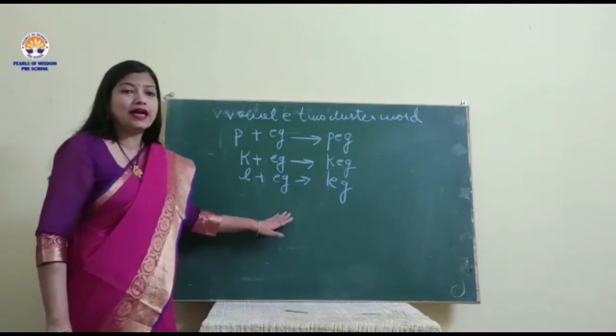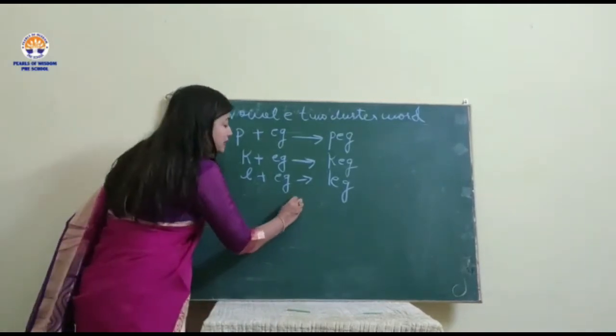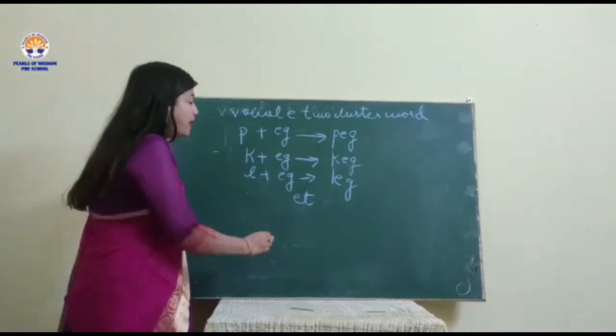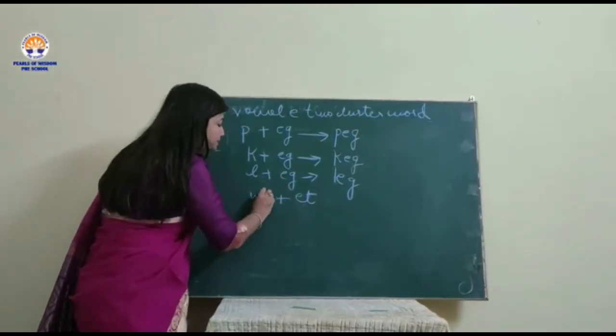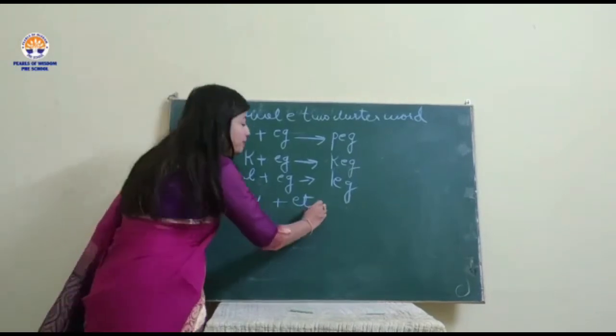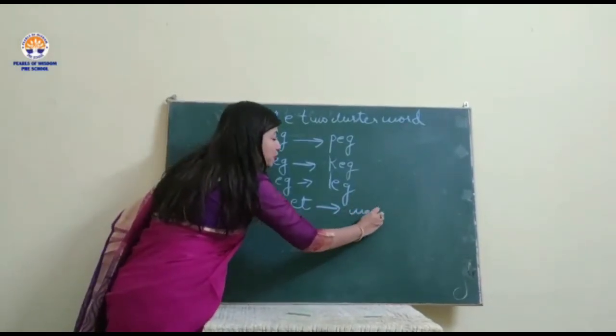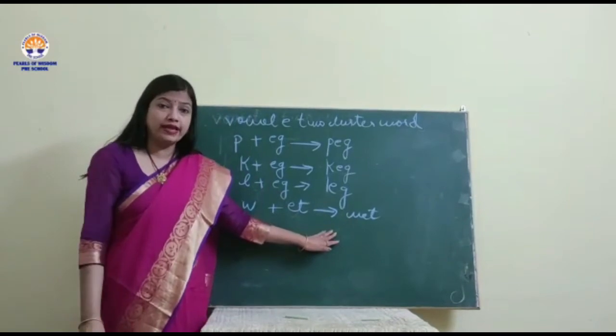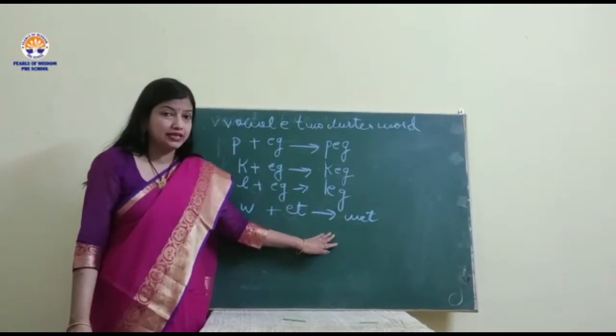Now we shall learn another set of words. That is, vowel ET cluster words. By adding W in front of ET, what does it become? It becomes wet: W, E, T wet. And when it rains we all get wet. Isn't it?